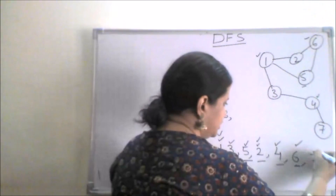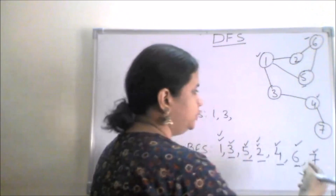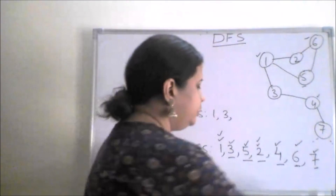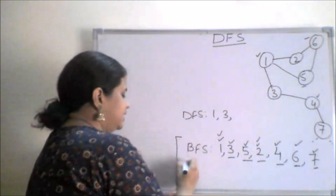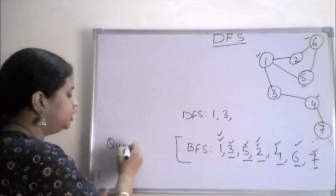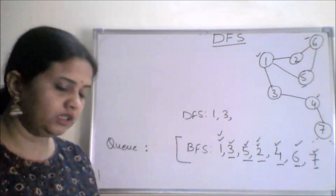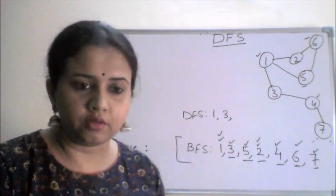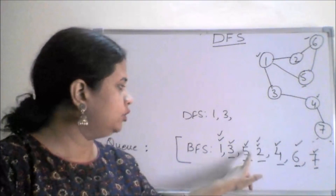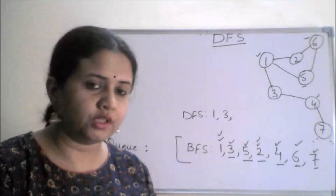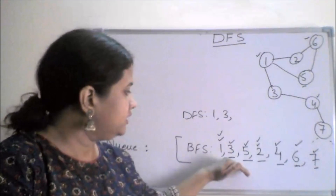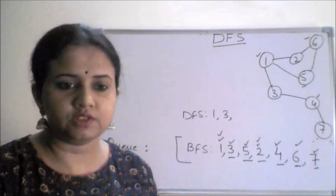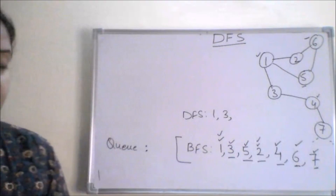We do the final traversal on the last node — seven — and check if there is any adjacent node in the graph. There is none, so we stop. This BFS process uses a queue to keep track of which vertex to traverse next. The queue tells us the order: one, three, five, and so on. That is the basic concept of BFS.